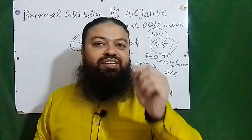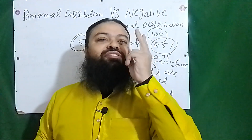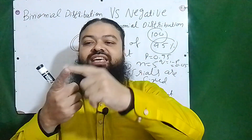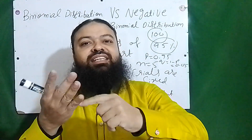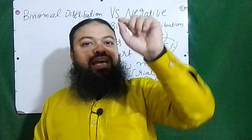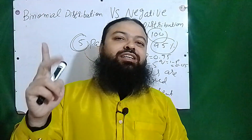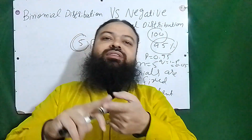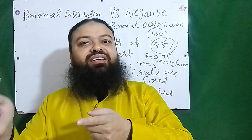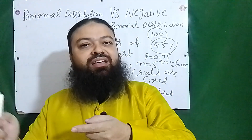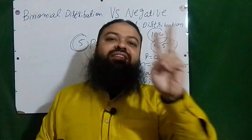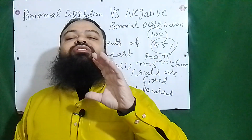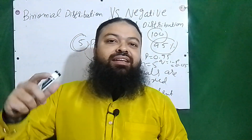The fourth and last property: each trial has two possible outcomes. In this example, our trials are patients A, B, C, D, and E. Everyone has two possible outcomes — either they will be alive or die. Success is survival and death is failure. This is the complete case of binomial distribution.